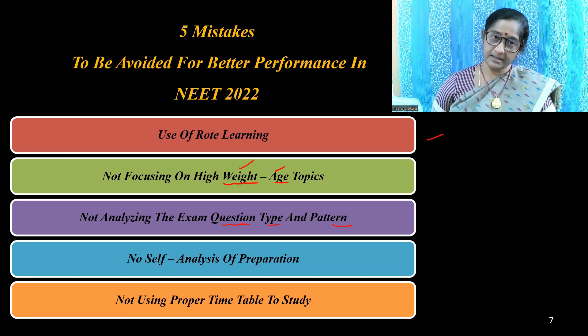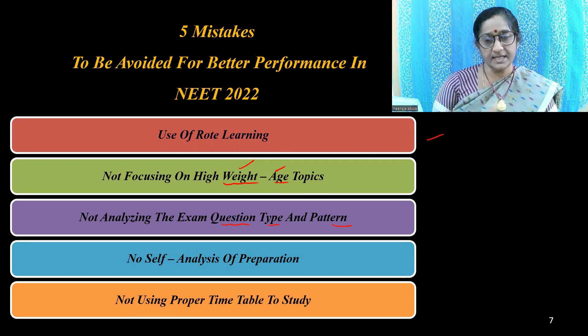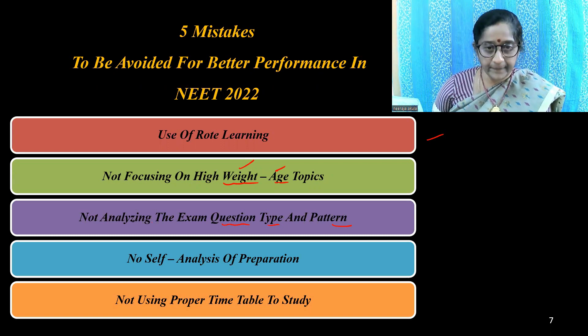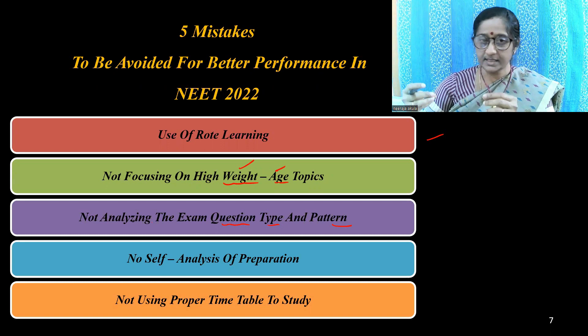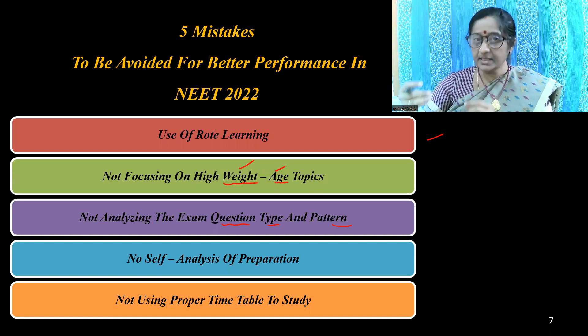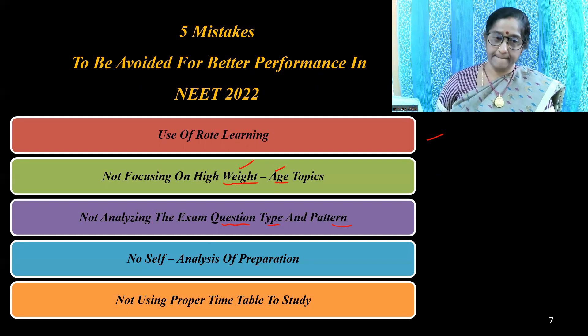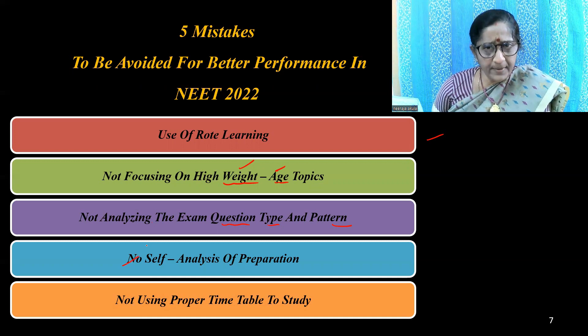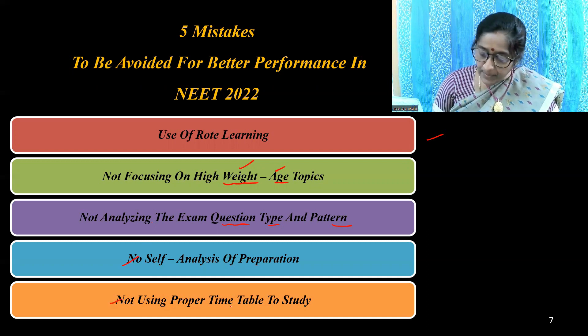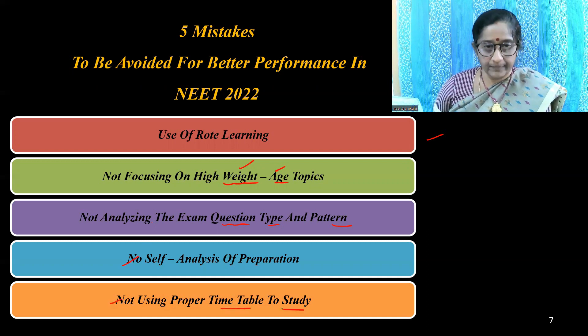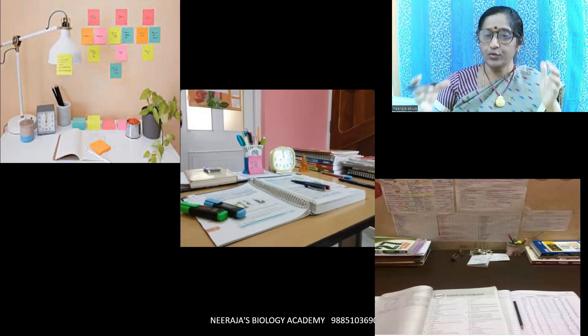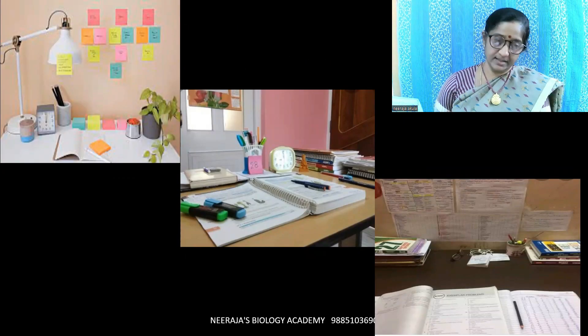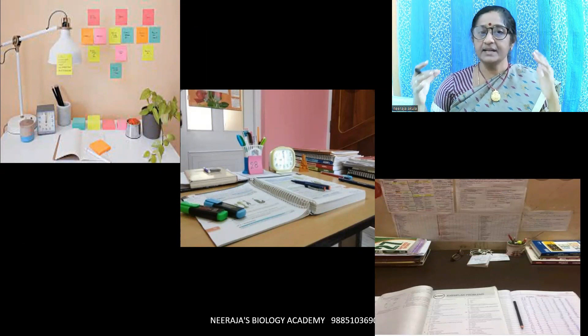Third, not analyzing the exam question type and pattern. In 2021, the pattern changed — we got Section A and Section B, with botany and zoology papers separately. You should be cautious while answering Section B questions. Fourth, no self-analysis of preparation. Fifth, not using a proper timetable to study. A healthy and pleasant environment is very much essential for your preparation.